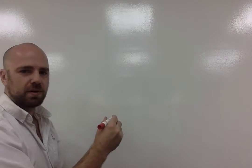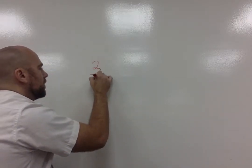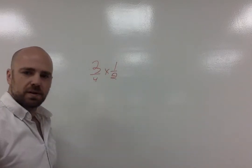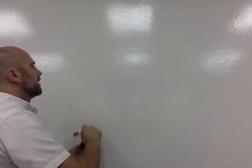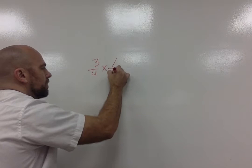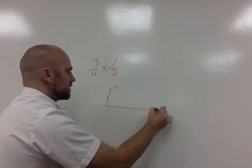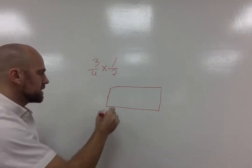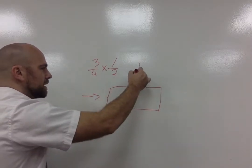If I'm doing an example similar to 3 fourths times 1 half, let's rewrite this. So 3 quarters times 1 half. What I'm going to use is this box. One of the boxes or one direction of the box. So basically I'm going to have this times this.